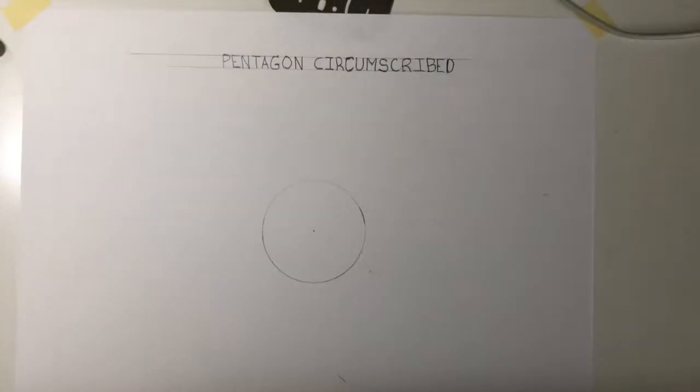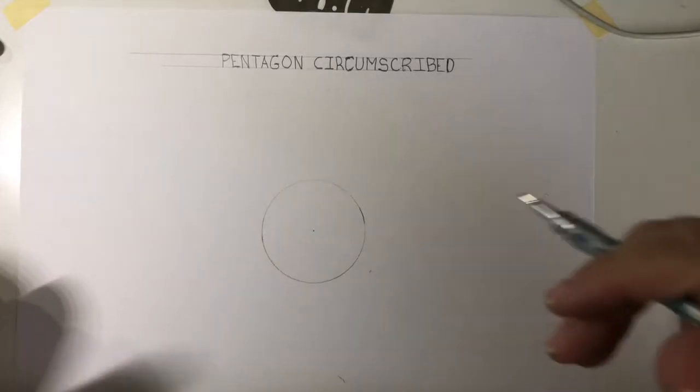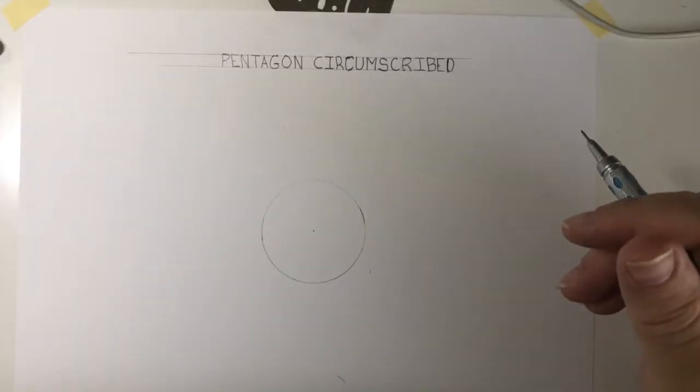So that is our four inch, or four feet in diameter using a half inch scale circle, for our circumscribed pentagon.